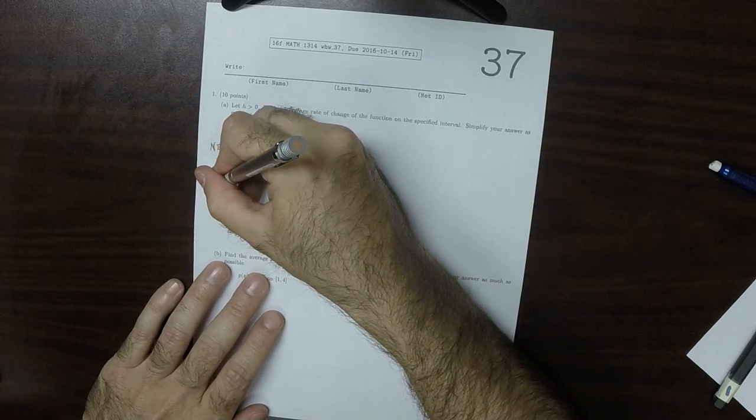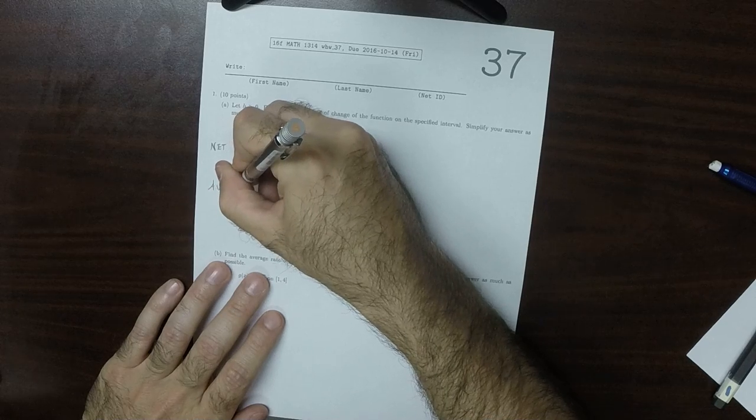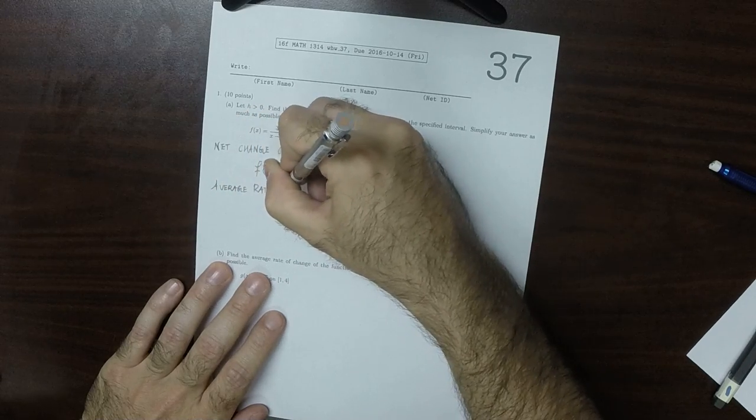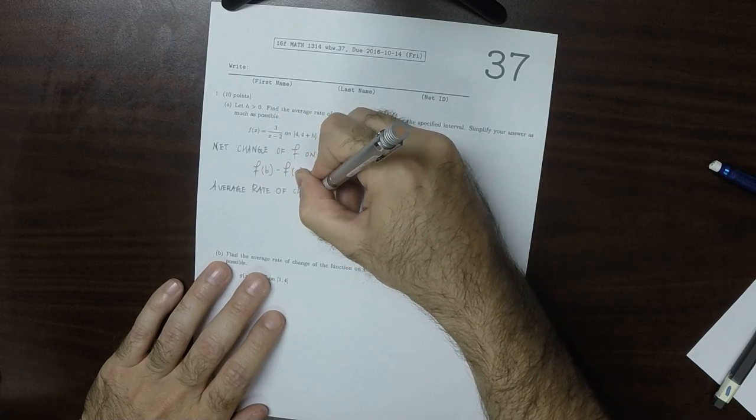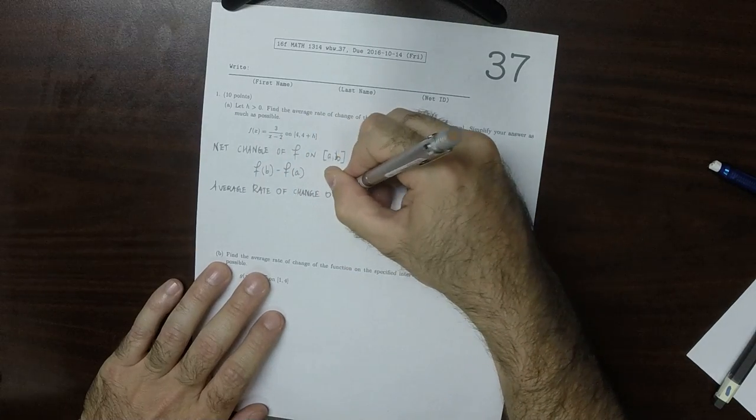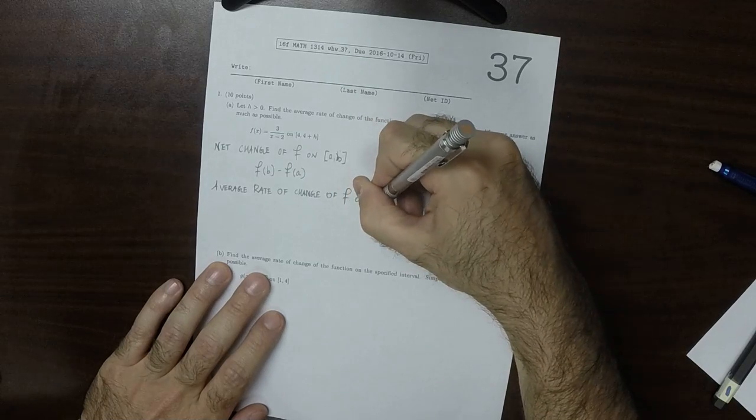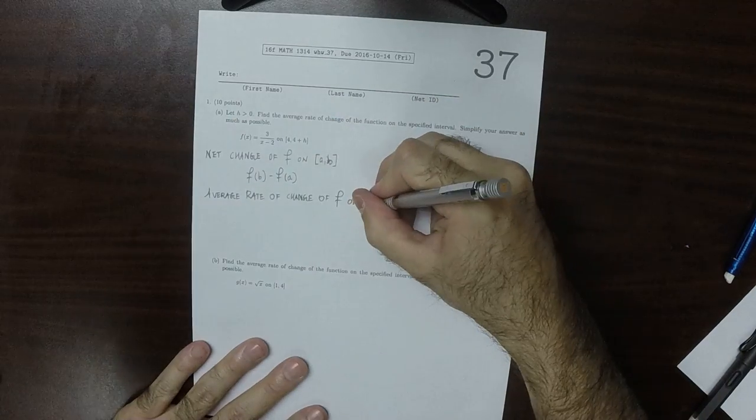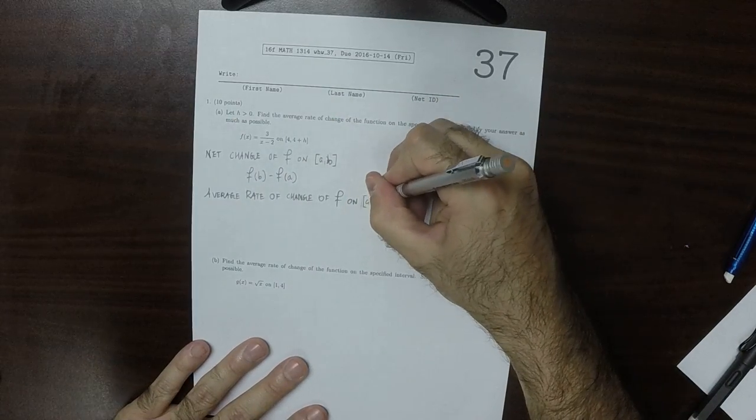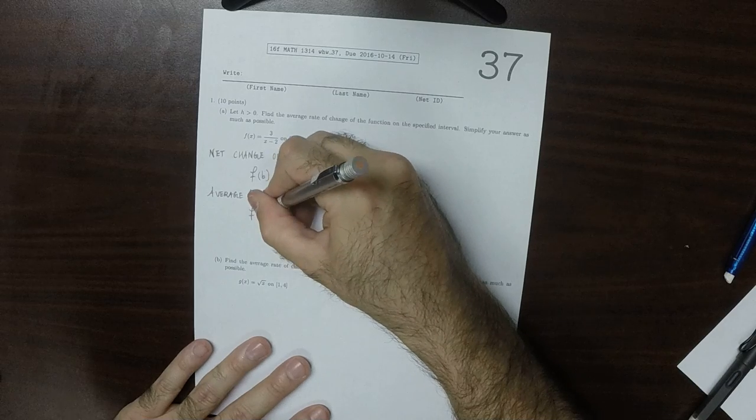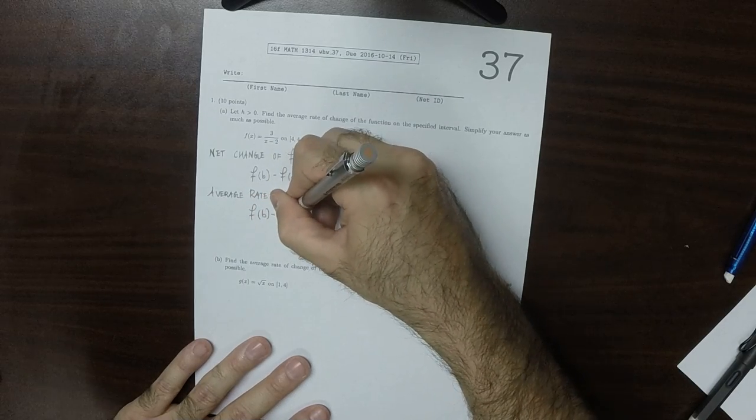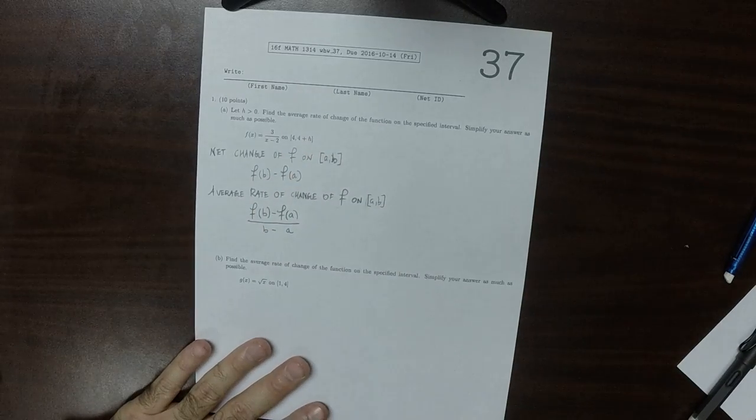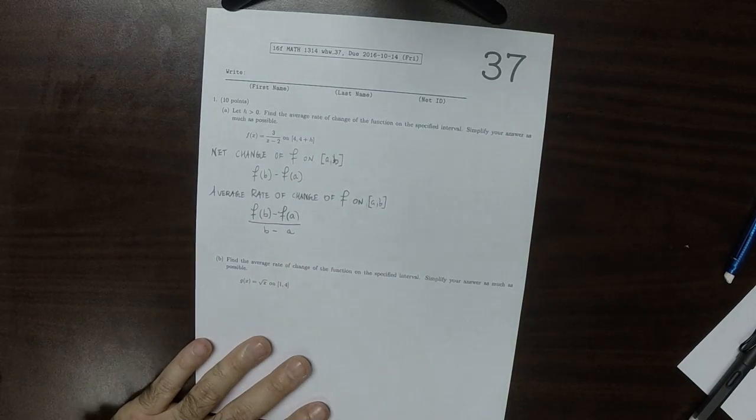And then the average rate of change of F on A to B is F(B) minus F(A) over B minus A. So this is what is being asked for.